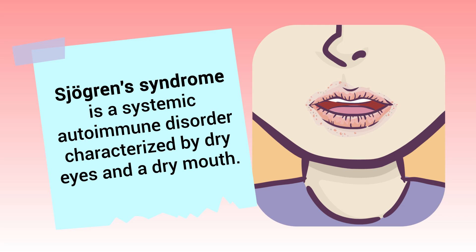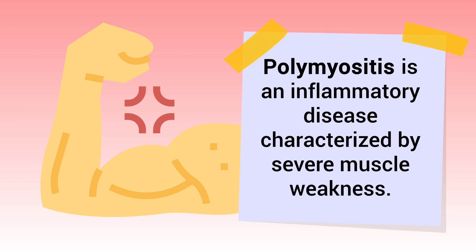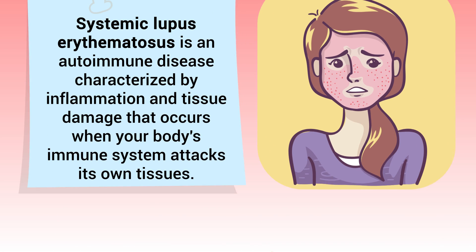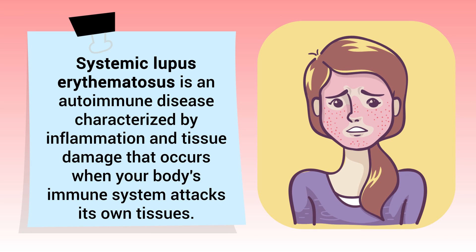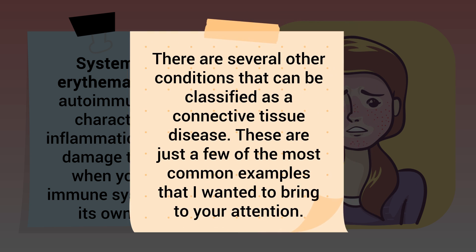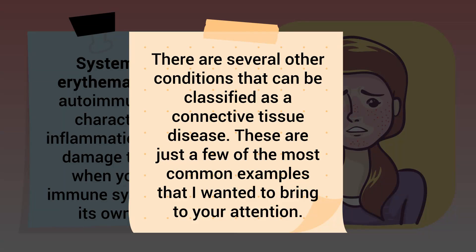Sjögren's syndrome is a systemic autoimmune disorder characterized by dry eyes and a dry mouth. Polymyositis is an inflammatory disease characterized by severe muscle weakness. And lupus is an autoimmune disease characterized by inflammation and tissue damage that occurs when your body's immune system attacks its own tissues.